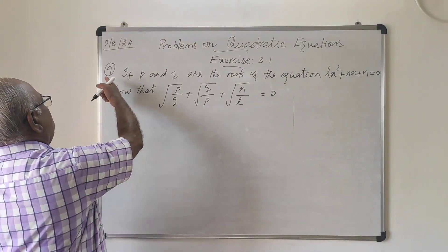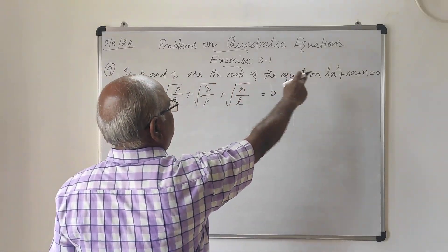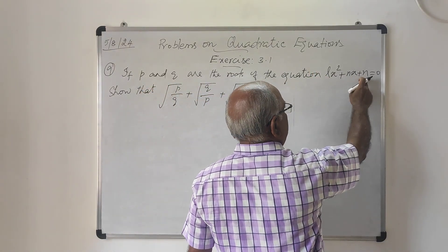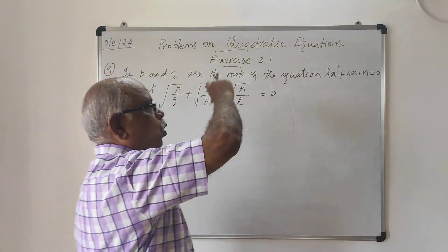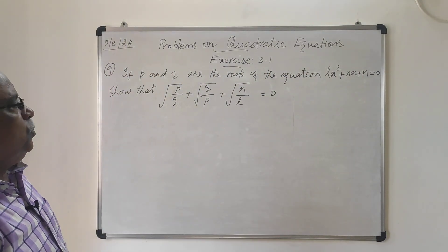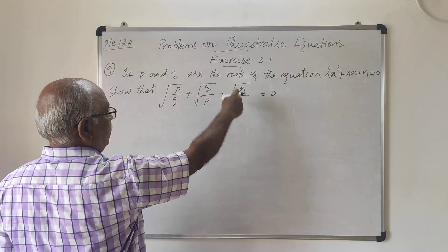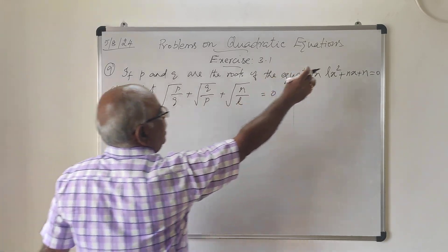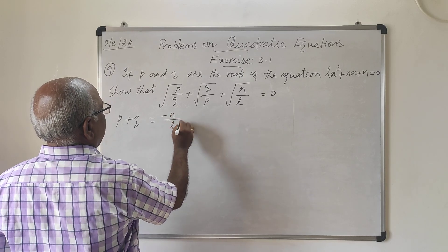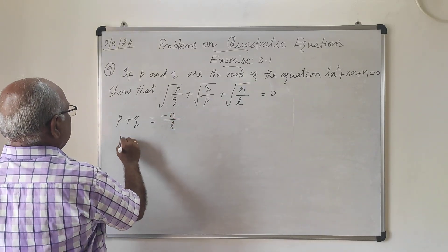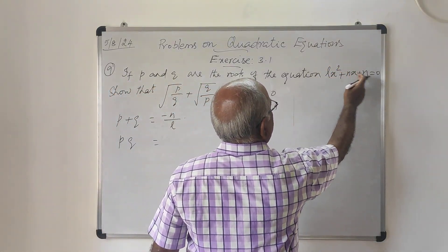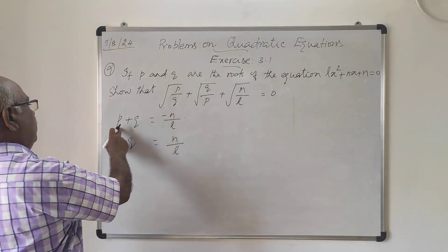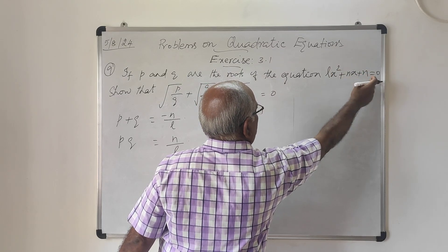Now let us solve problem number 9 in the exercise. If p and q are the roots of the equation lx² + nx + n = 0, then show that √(p/q) + √(q/p) + √(n/l) = 0. Since p and q are roots, the sum p+q = −n/l and the product pq = n/l (that is c/a, where c = n).